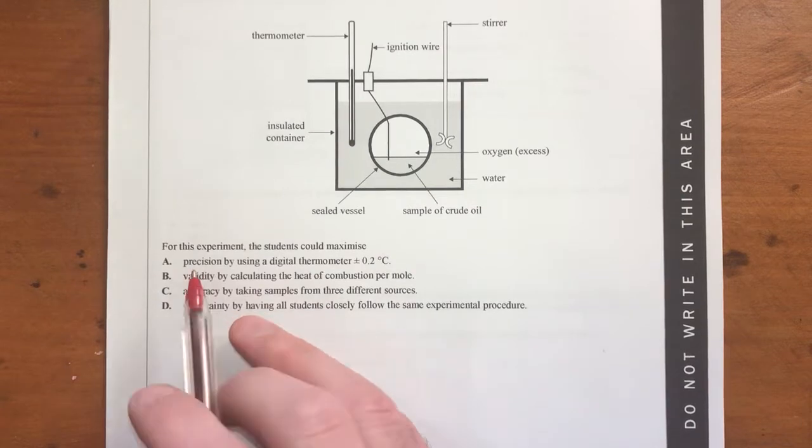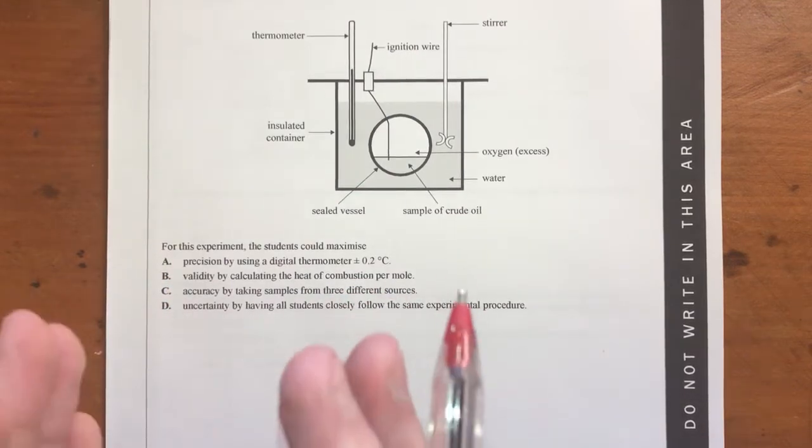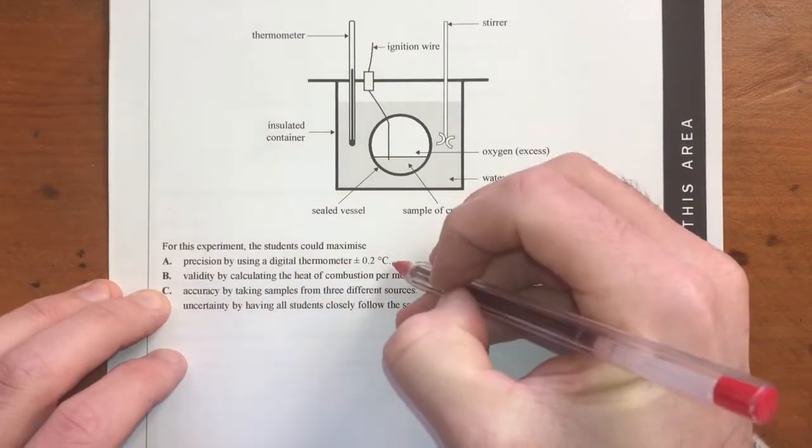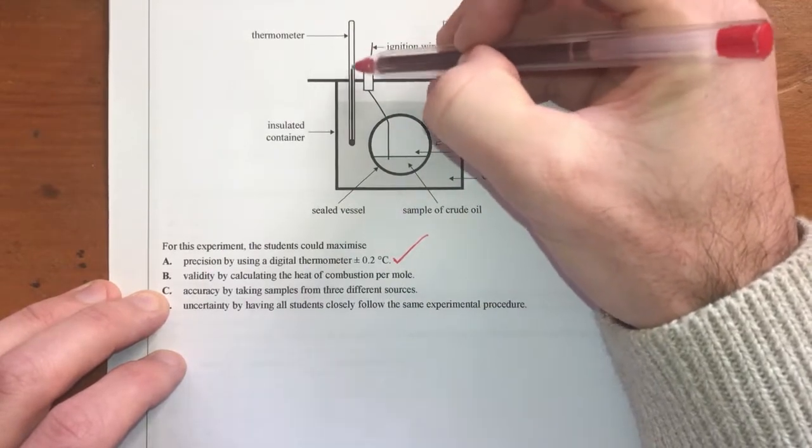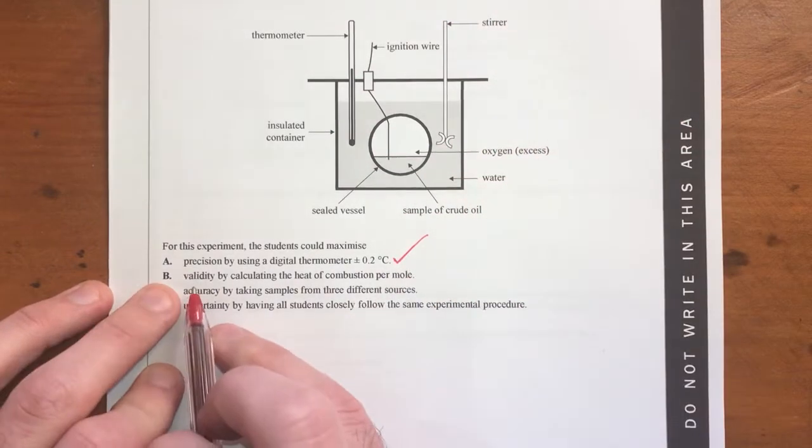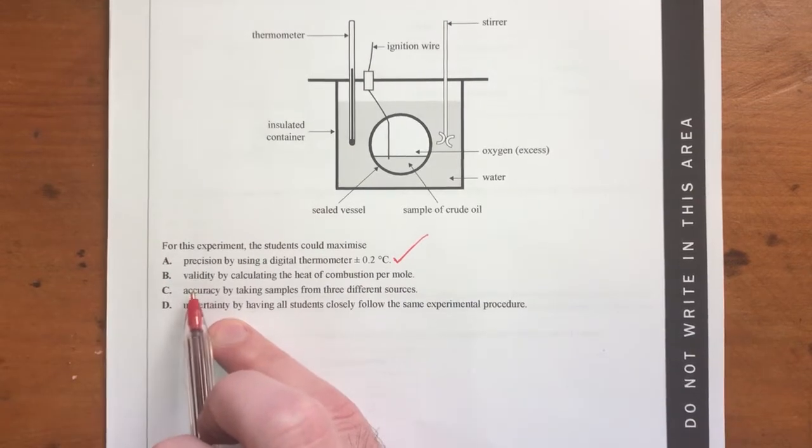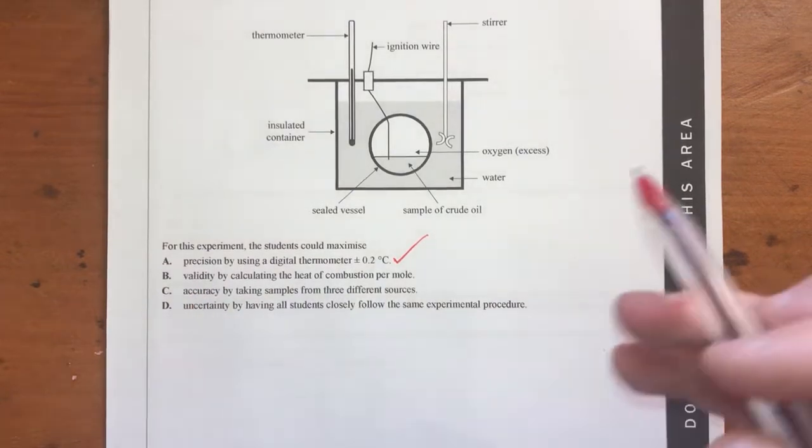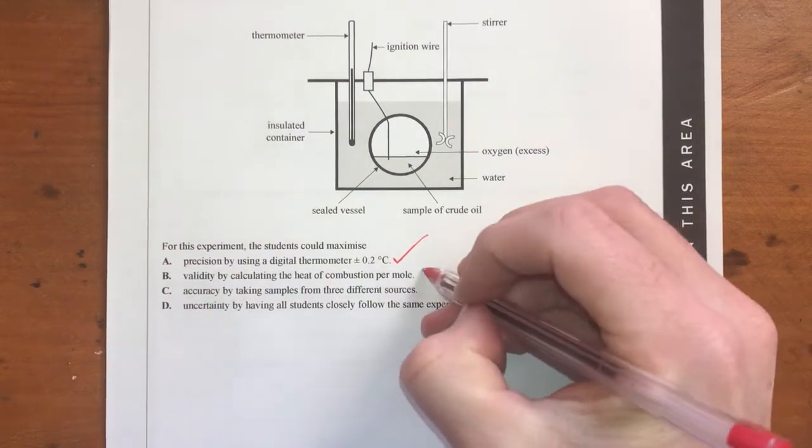Precision is about how precise your instrument is and the smaller range of values could be good. Using a digital thermometer, that looks pretty precise to me. So obviously, rather than using a thermometer here, where you've probably got about a 0.5 degree difference maybe at the best, that looks pretty good. Validity, by calculating the heat of combustion per mole. Validity is kind of about how valid your method actually is and making sure that you've eliminated all variables and things like that. Doing this isn't going to really improve your ability at all. So I'm going to say no to that one.